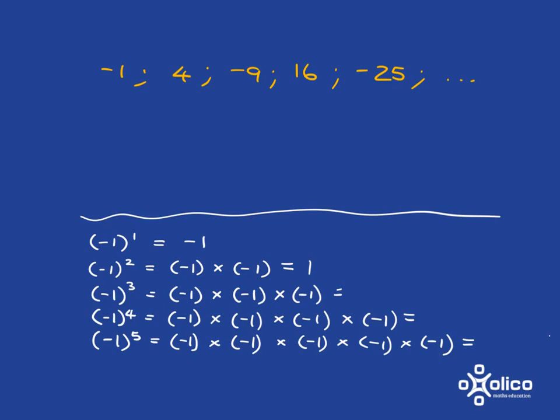Negative 1 cubed, you've got negative 1 times negative 1 times negative 1, that is going to be negative 1. Negative 1 to the power of 4, you're going to have negative times negative is positive, times negative is negative, times negative becomes positive again, so you get 1. And negative 1 to the power of 5 is going to be negative times negative, positive times negative, etc. You can figure this one out. You'll see that the answer is negative.